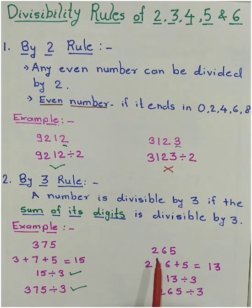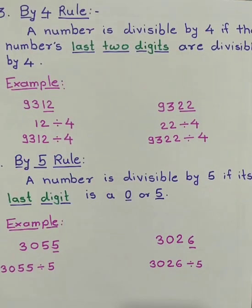So let's check one more example. 265. 2 plus 6 plus 5 is equal to 13. So we can't divide 13 by 3. As this test fails, we can't divide 265 by 3. I hope you are getting these rules. And with practice, you can master it. As of now, we have learnt two rules. Let's continue with the next rule.